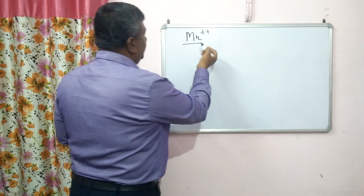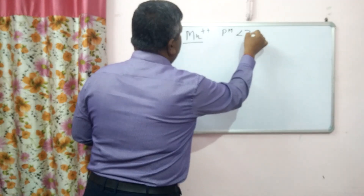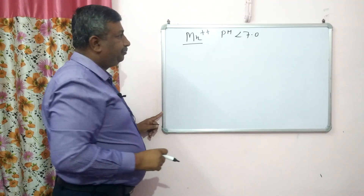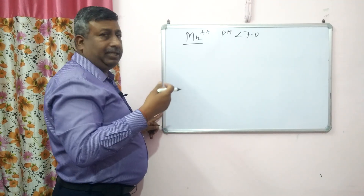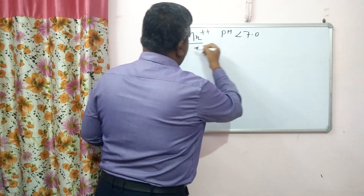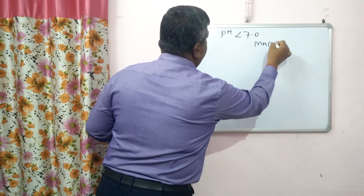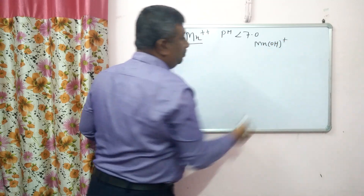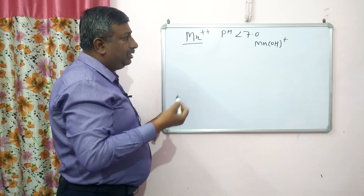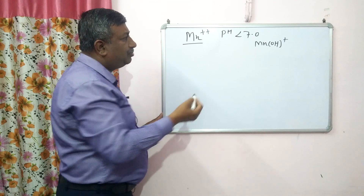At acidic pH, if pH is less than 7, the Mn²⁺ species is present. As pH is increased, hydroxyl ions react with manganese, producing MnOH⁺, which is less soluble. Similarly, other hydroxide forms also exist and are less soluble.